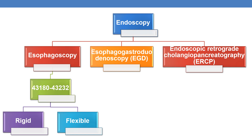As discussed, endoscopy is divided into esophagoscopy, EGD, and ERCP. The current session covers esophagoscopy, CPT range 43180 to 43232. Broadly, these CPTs are categorized by the type of esophagoscopy: it can be rigid or flexible.